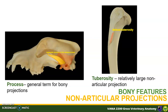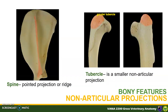A tuberosity is a relatively large non-articular projection; a typical example is the deltoid tuberosity of the humerus, which functions as the site of insertion of the deltoideus muscle. Other non-articular projections include the spine, which is a pointed projection or ridge, as in the case of the scapular spine, and the tubercle, which is a smaller non-articular projection, like the greater tubercle and lesser tubercle of the humerus.